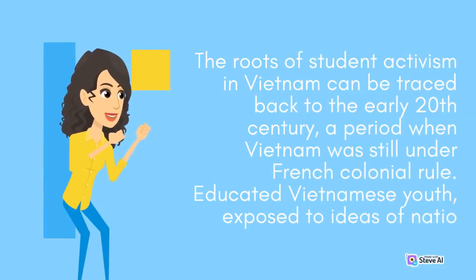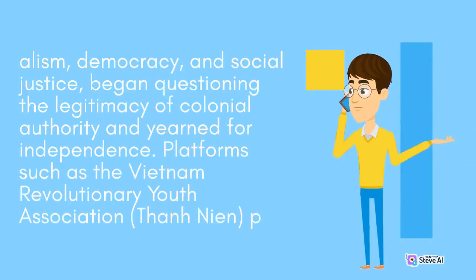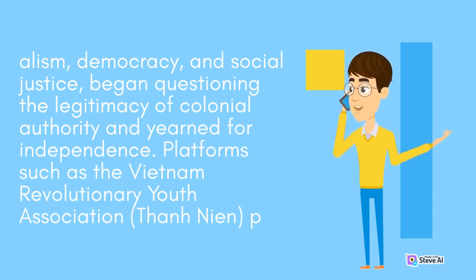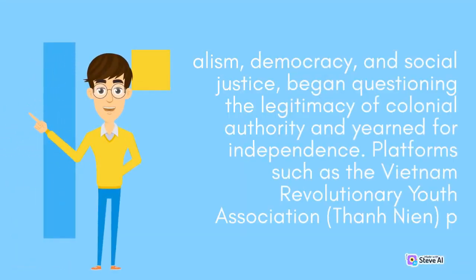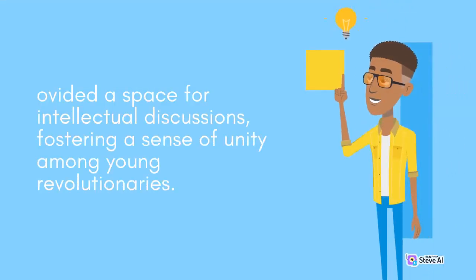The roots of student activism in Vietnam can be traced back to the early 20th century, a period when Vietnam was still under French colonial rule. Educated Vietnamese youth, exposed to ideas of nationalism, democracy, and social justice, began questioning the legitimacy of colonial authority and yearned for independence. Platforms such as the Vietnam Revolutionary Youth Association provided a space for intellectual discussions, fostering a sense of unity among young revolutionaries.